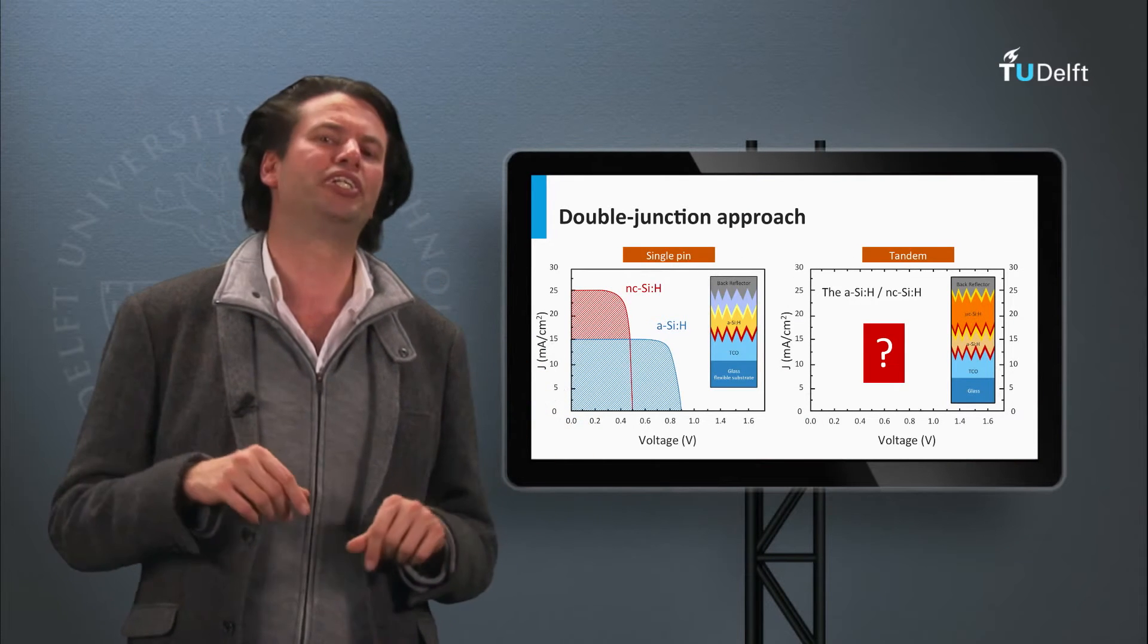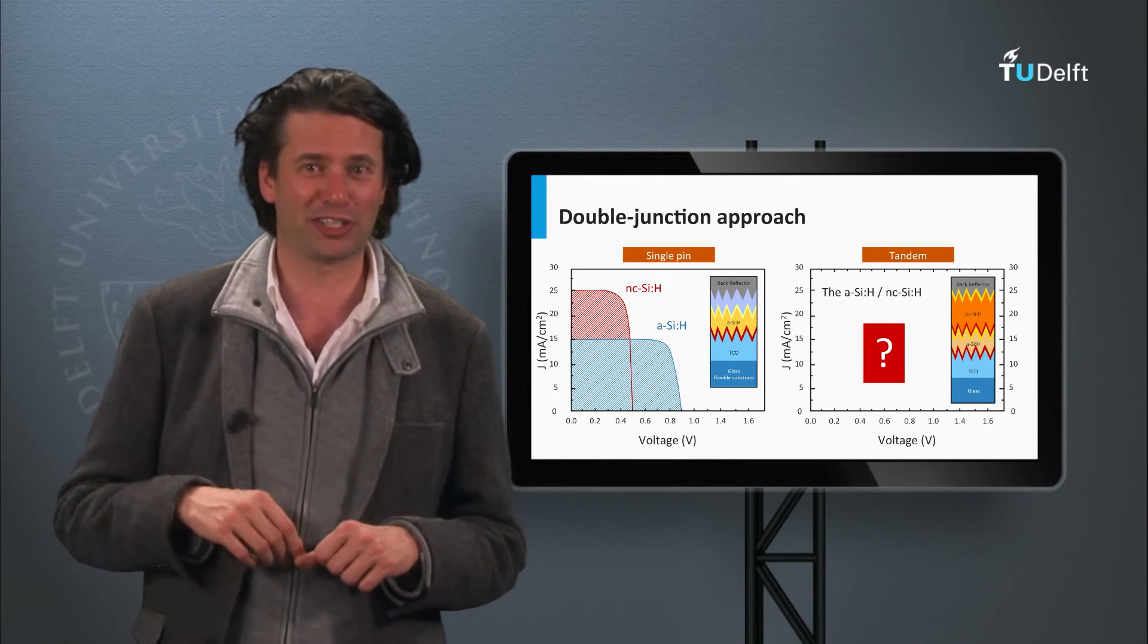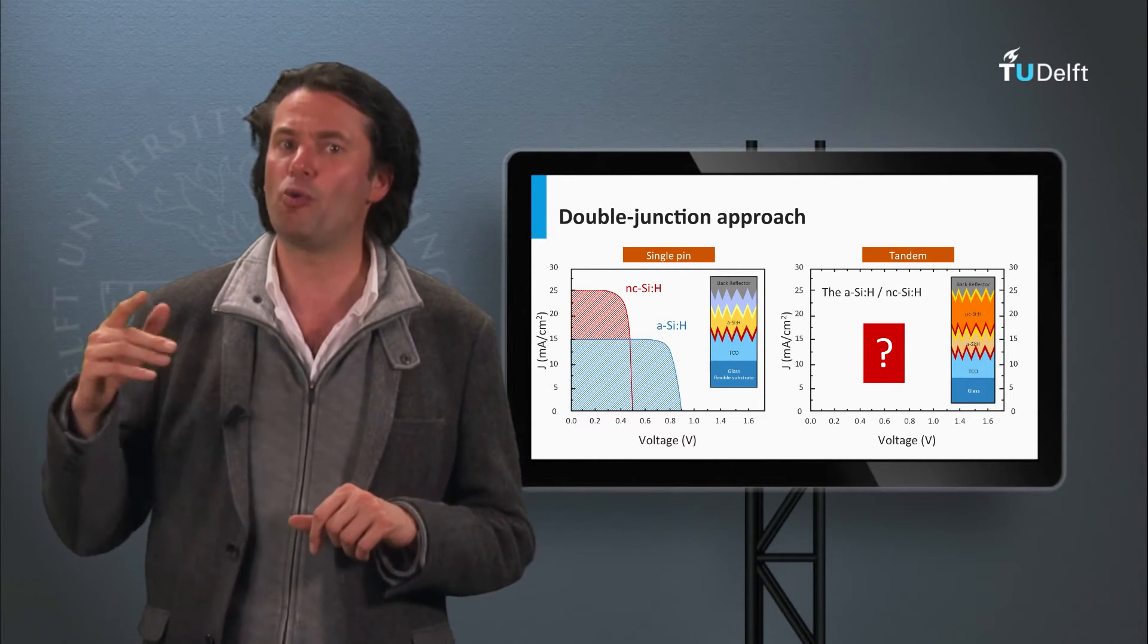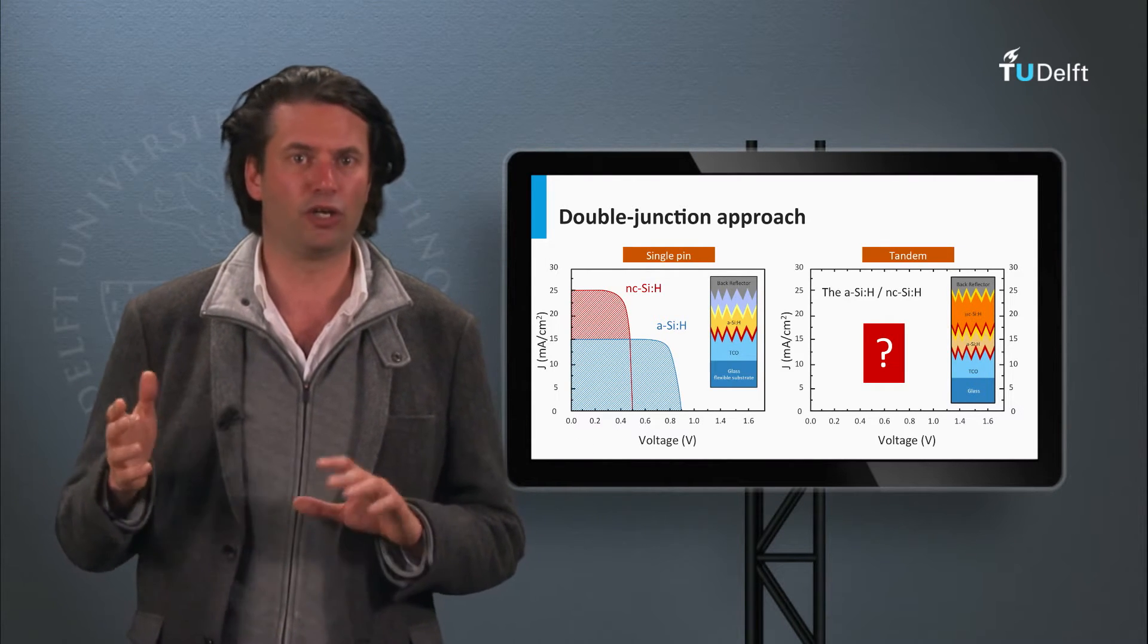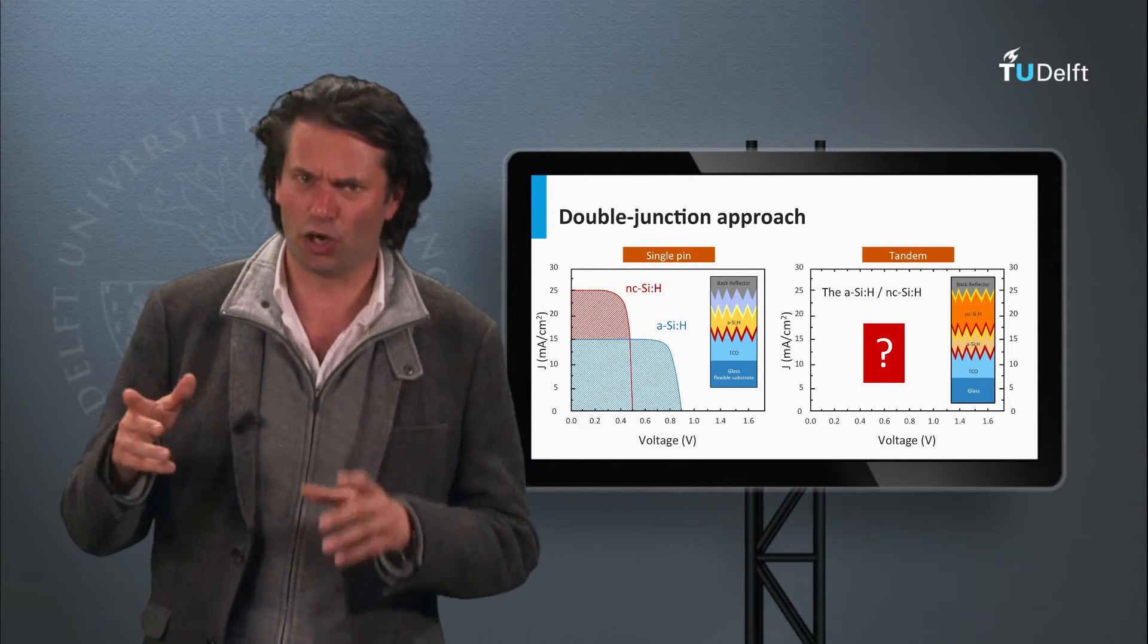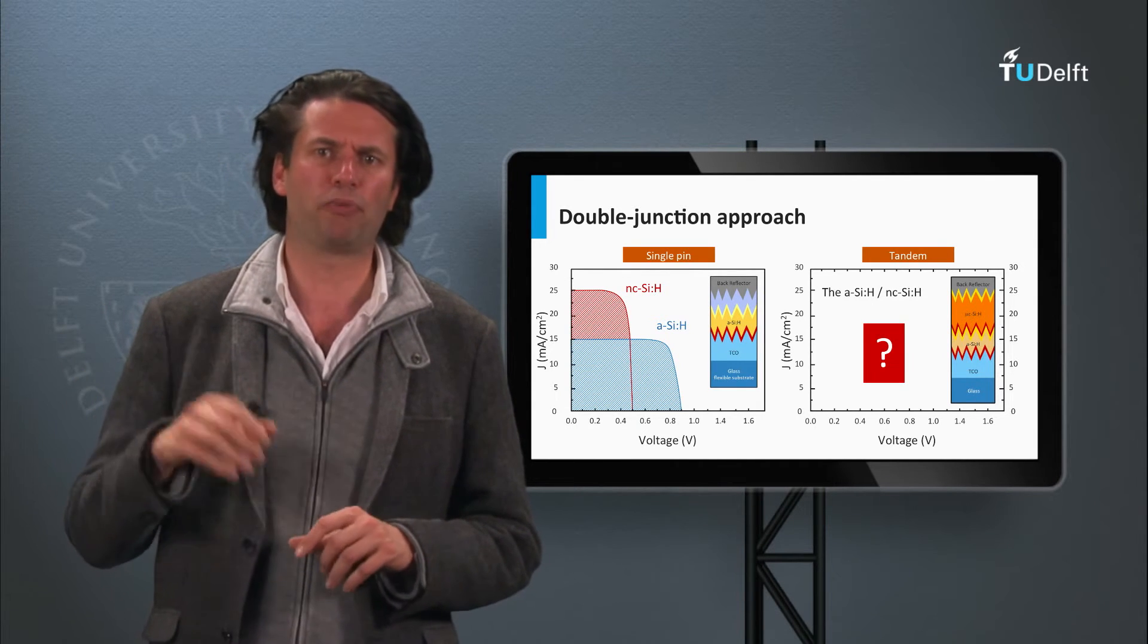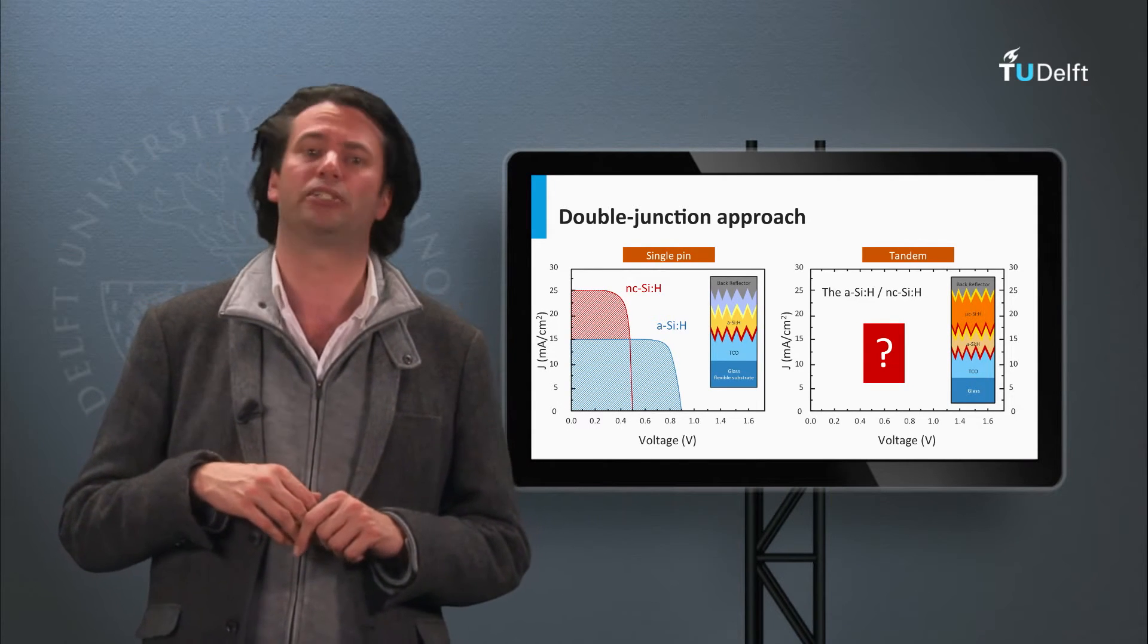Let's look at the JV curves of a single junction amorphous silicon solar cell and that of a single junction nanocrystalline silicon solar cell. The high bandgap amorphous silicon has a high open-circuit voltage of let's say 0.9 V and a relatively low short-circuit current density of 15 mA per square centimeter, whereas the low bandgap material of nanocrystalline silicon has a lower open-circuit voltage of 0.5 V and a higher short-circuit current density of 25 mA per square centimeter.